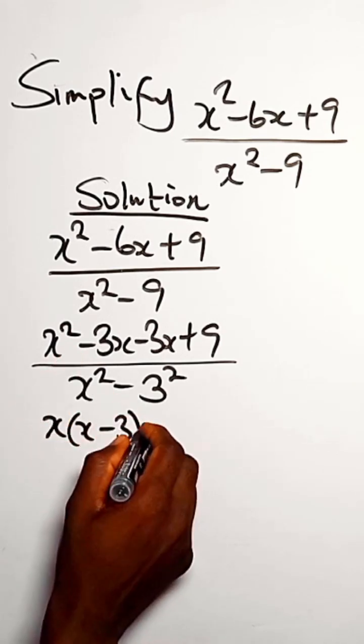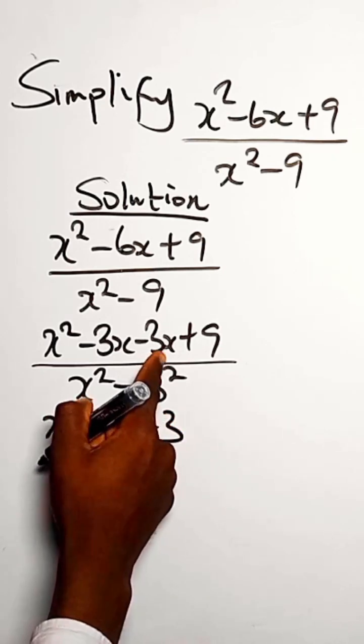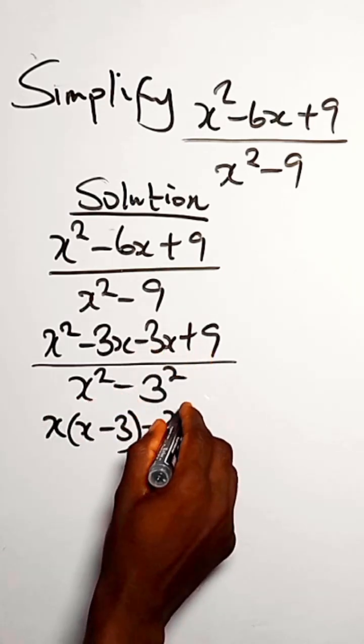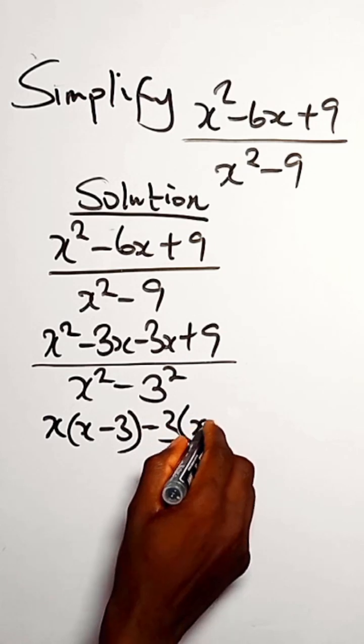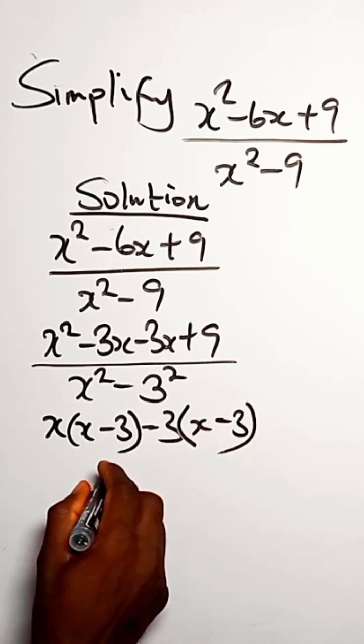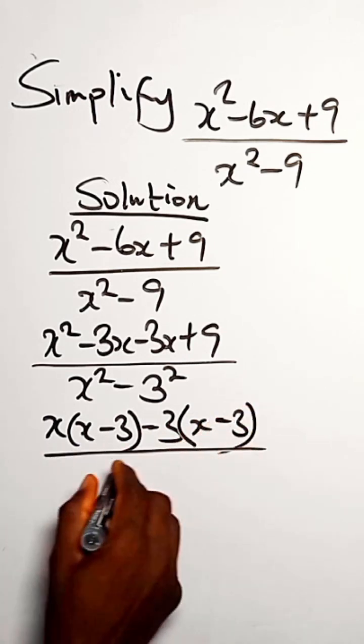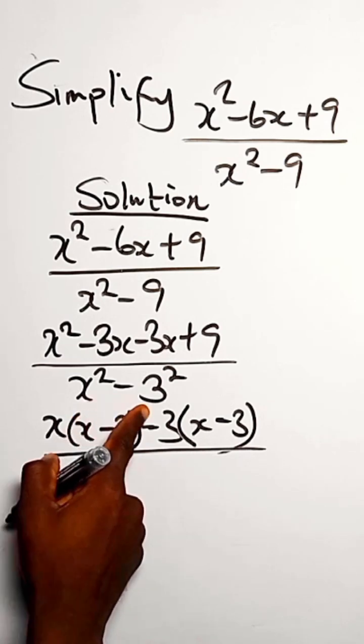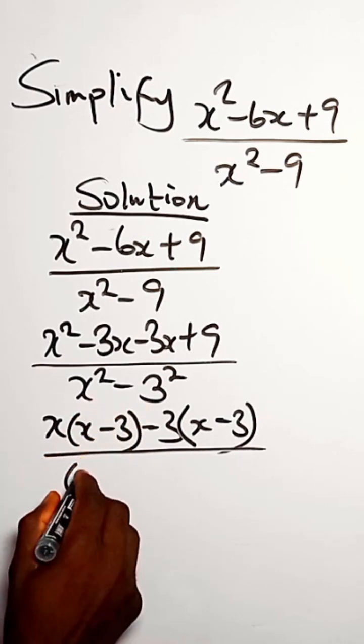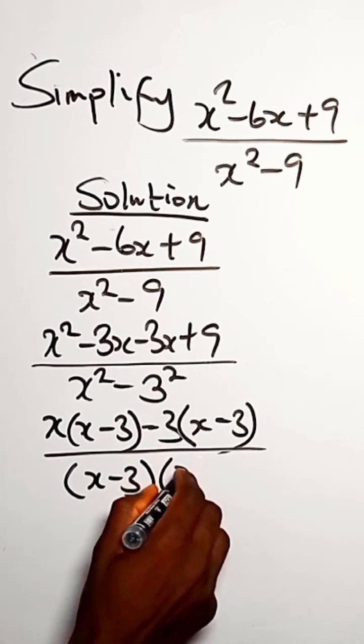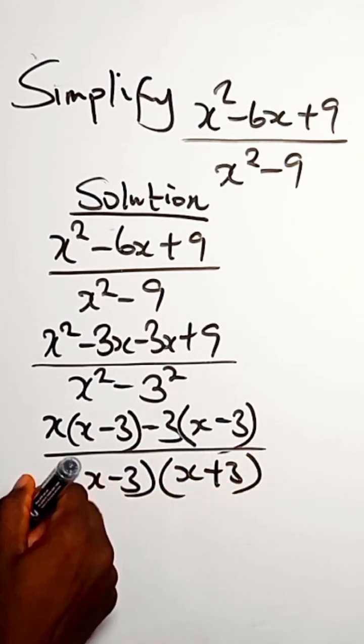For this, we can group this and arrange it: x into (x - 3) minus 3, we can factor out 3 is common, into (x - 3). For x² - 3², we can have it as (x - 3)(x + 3) when we apply the difference of two squares.